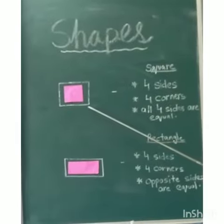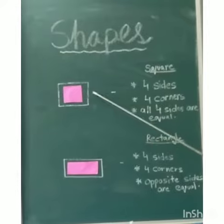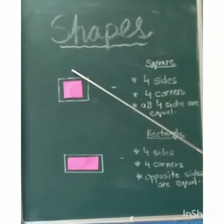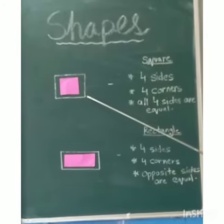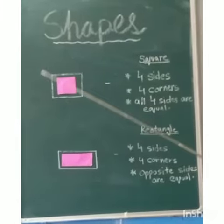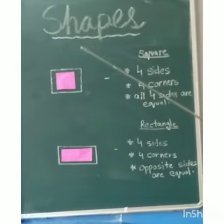This is a square. A square has four sides, four corners, and all the four sides of a square are equal.